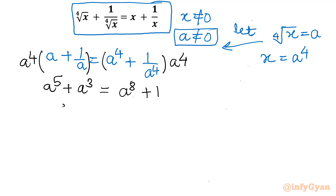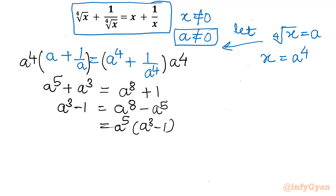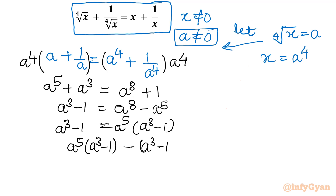Now I will move terms: a cubed minus 1 to the left, and a to the power 8 minus a to the power 5 to the right. I will take a to the power 5 common from the right, giving a cubed minus 1. The left hand side is also a cubed minus 1. So I can take all terms to one side and factor: a^5 times (a³ minus 1) minus (a³ minus 1) equal to 0, then take a³ minus 1 common.